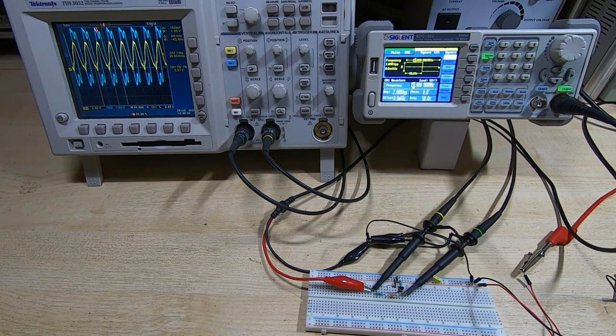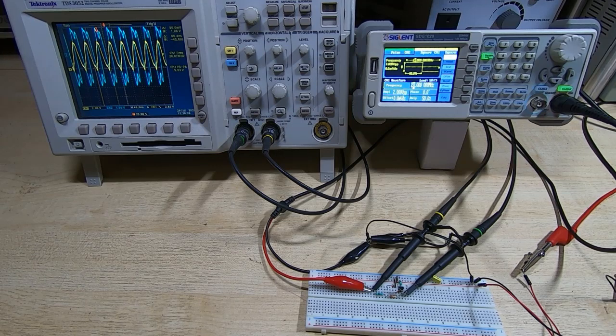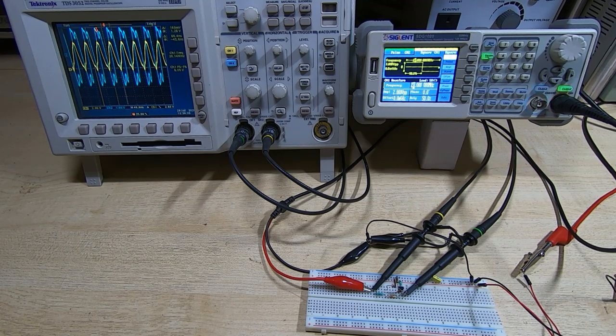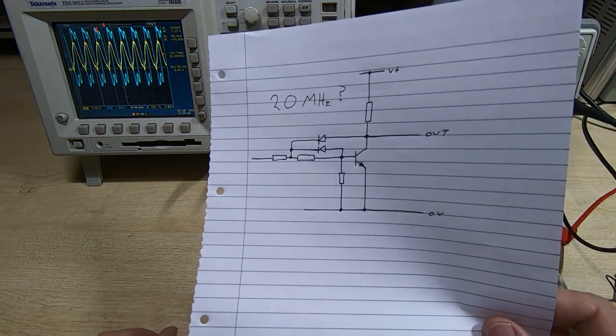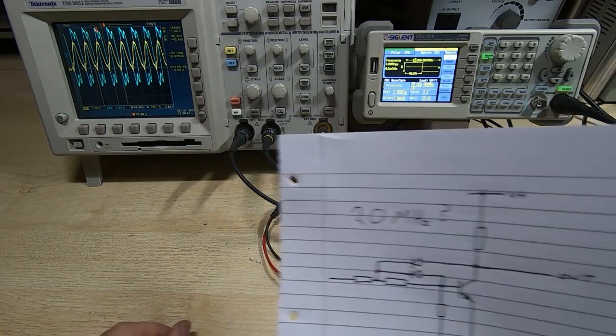So it is switching - it's not giving us very fast edges, but it should still work. So effectively we can switch now up to around 20 megahertz, but with relatively poor signals.